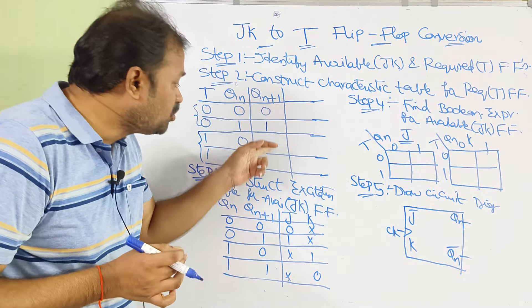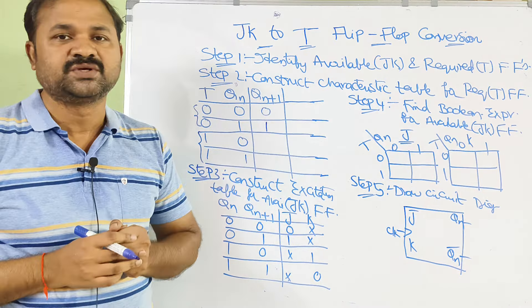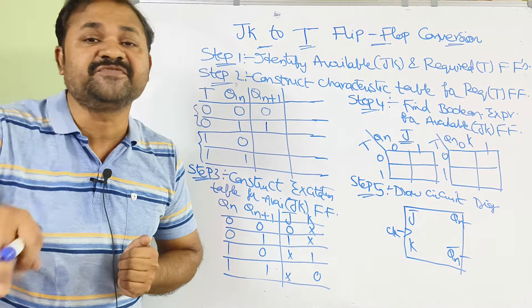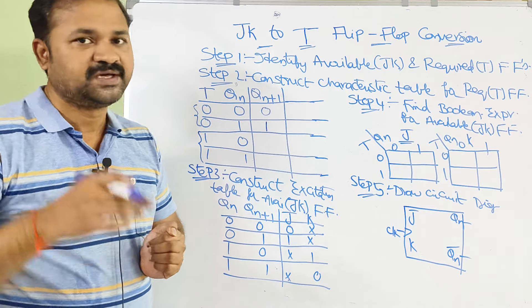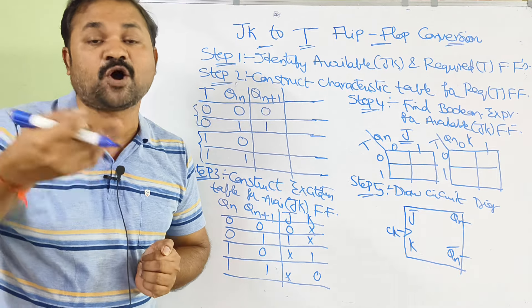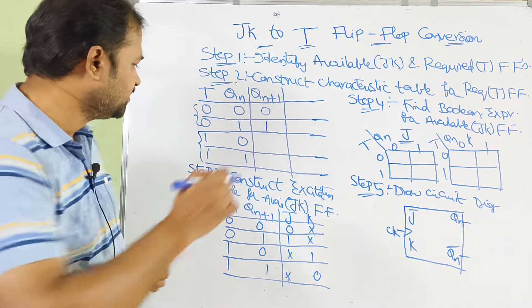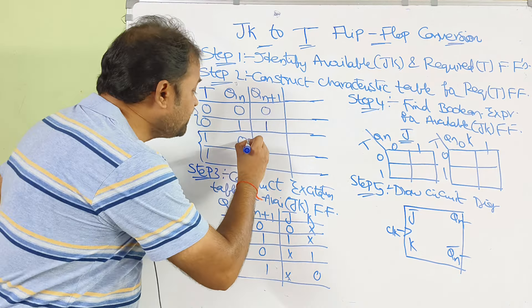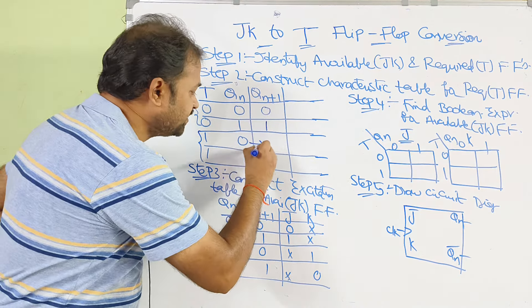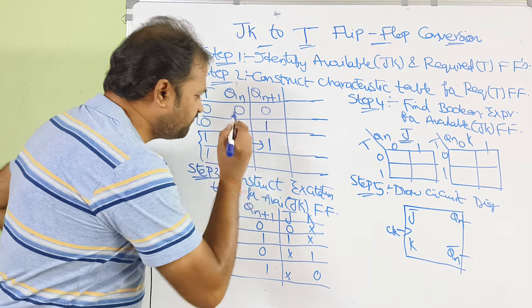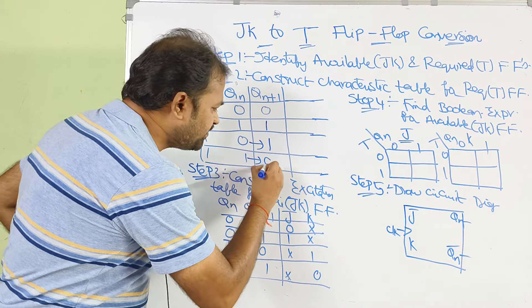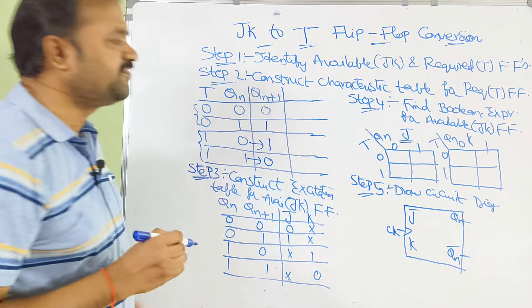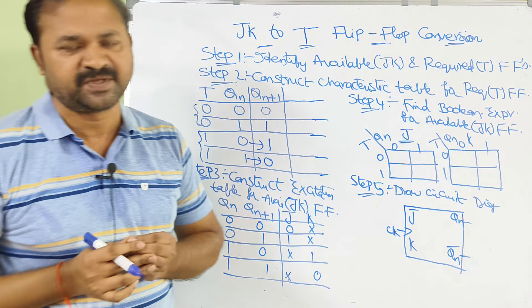Whereas if T value is 1, then the output Qn will be toggled — Qn will be complemented. So 0 will be complemented to become 1, and 1 will be complemented to become 0.